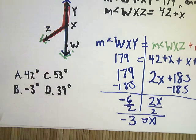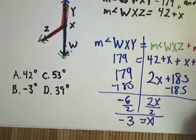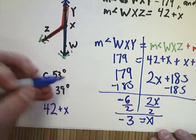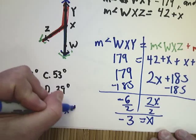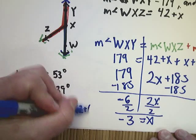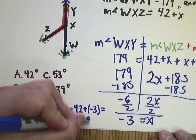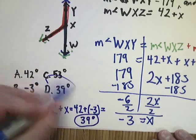So, if I had WXZ, and I know it's 42 plus X, I'm just going to do 42 plus X. And where the X is, I'm going to plug in negative 3. And then I work that out, and it gives me 39 degrees. So, right there.